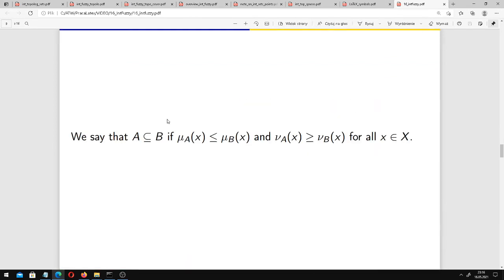We say that A is contained in B if the membership function of A is not bigger than the value of the membership function of B for all x in our universe, and the non-membership function of A of x is greater or equal than the non-membership function of B at x.